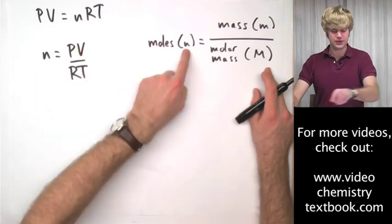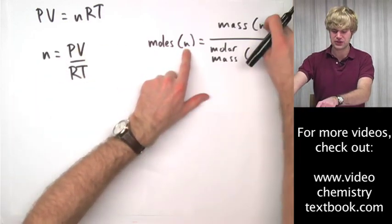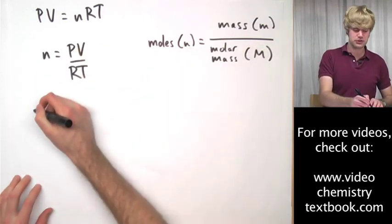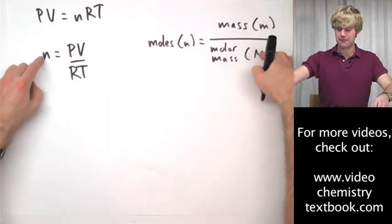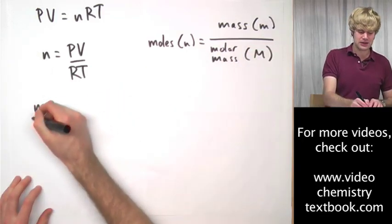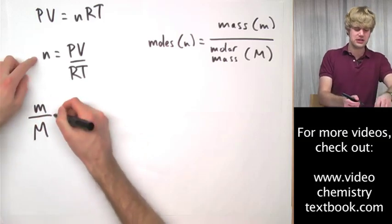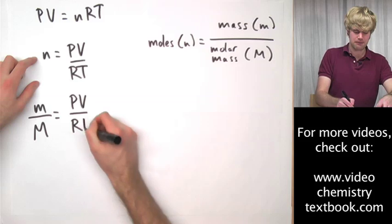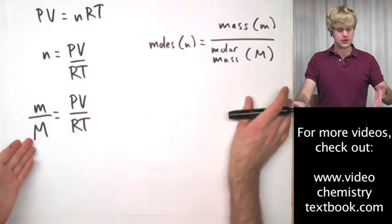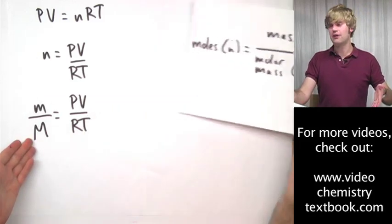So what I've written as moles here, I can rewrite as mass divided by molar mass. So I'm going to substitute little m divided by big M, mass divided by molar mass, in for n. So mass divided by molar mass equals PV divided by RT. So there's molar mass. That's how we got that into the equation.